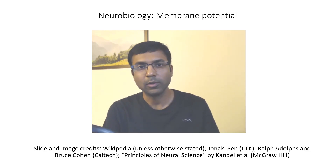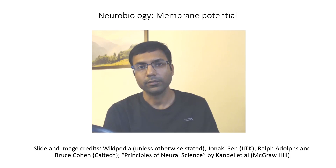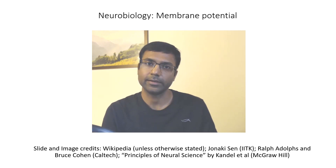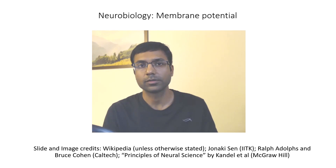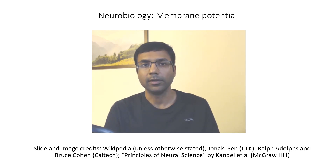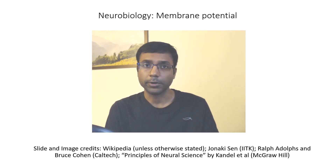In the last few videos, we have been looking at electrical properties of neurons. We have seen different ions that are present commonly in neurons, and we have also looked at properties like resistance, capacitance, and current and voltage in neurons. Now we will try to use these properties to understand how neurons function, starting by looking at one very important property: the membrane potential.